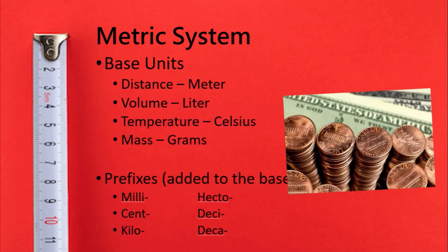The metric system is unique in that when we have a smaller or larger measurement, we don't really change the word very much. When you have a lot of meters, we just add a prefix — that might be hecto, centi, or deci. These prefixes can be added to any of the base units: milliliter, milligrams, millimeter. The only exception here is temperature, where we don't really change or add prefixes to it.